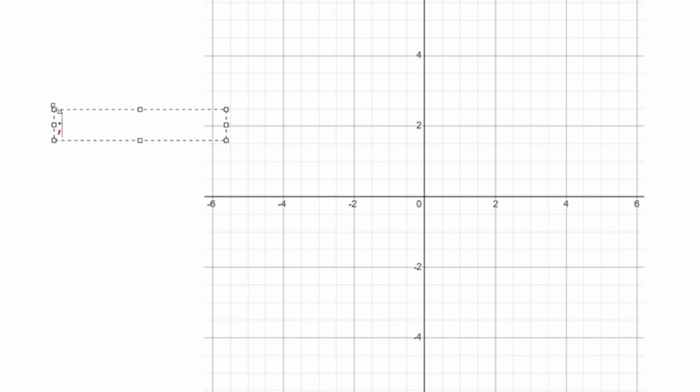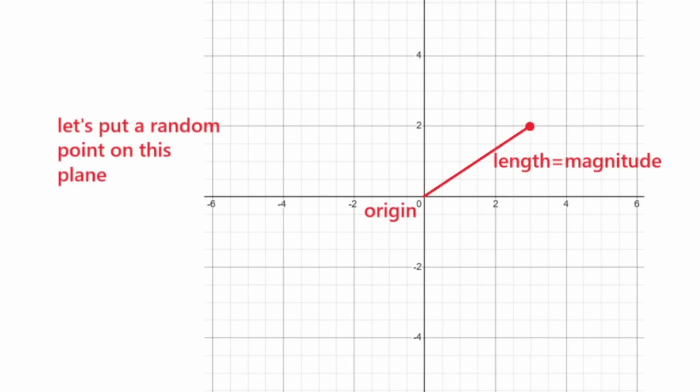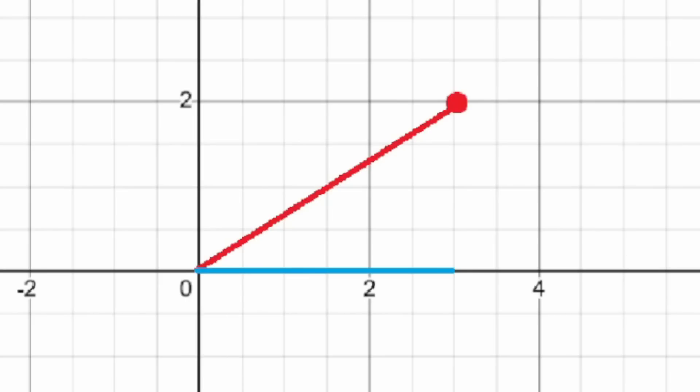Let's put a random point on this plane. Now, if we draw an arrow from the origin to that point, we get our magnitude immediately because it's just the length of this line. We can find the length with simple trig using the distance in the x and the distance in the y as the size of the triangle.